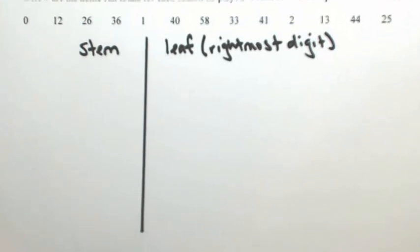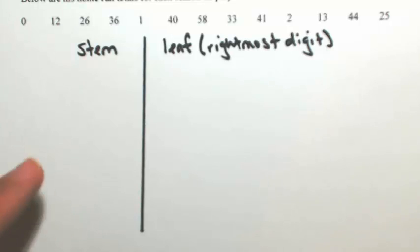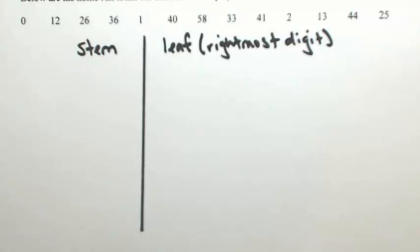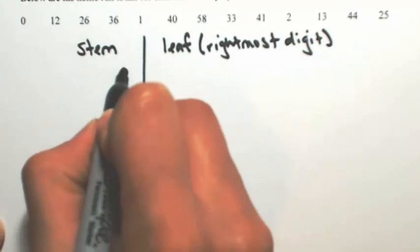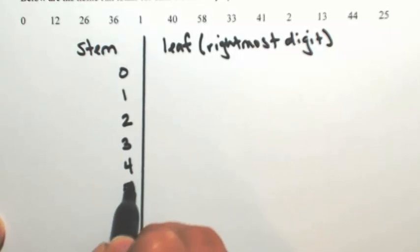Looking at the smallest number, in his first season he had no home runs. The most he had was 58. So we're going to go from 0 to 58. The stems are going to be 0, 1, 2, 3, 4, and 5. The stem represents the left side of the number, and the leaf represents the right side.